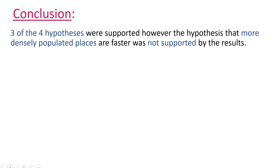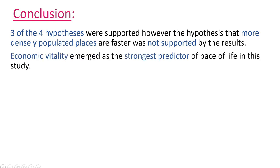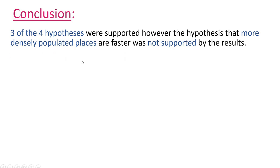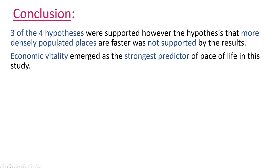In conclusion, three of the four hypotheses were supported, apart from the idea that more densely populated places are faster — that was not supported by the results. Maybe physically you just can't be as fast when there are loads of people. Economic vitality emerged as the strongest predictor of pace of life in this study. Why do you think this might be? Pause the presentation and have a think about it.